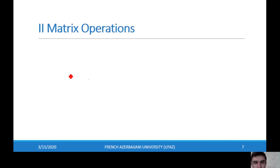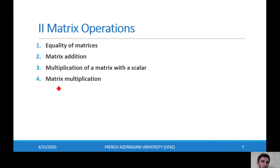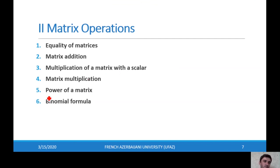Now let's look at matrix operations. There are some operations over matrices: equality of matrices, matrix addition, multiplication of a matrix with a scalar, matrix multiplication, power of a matrix, and the matrix binomial formula. I will explain the first four of them in this lecture, and the rest in the next one.